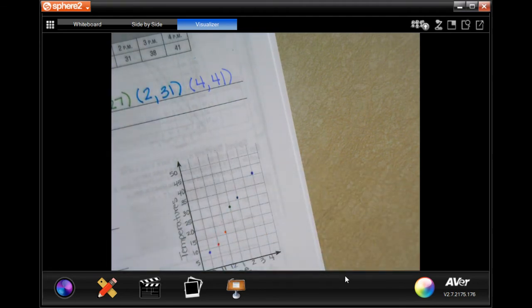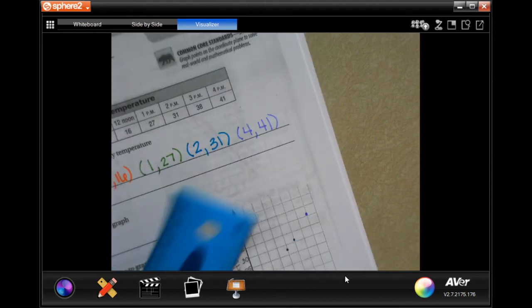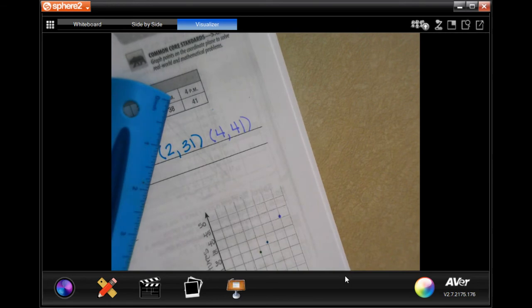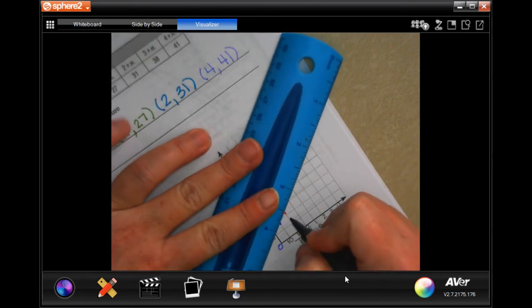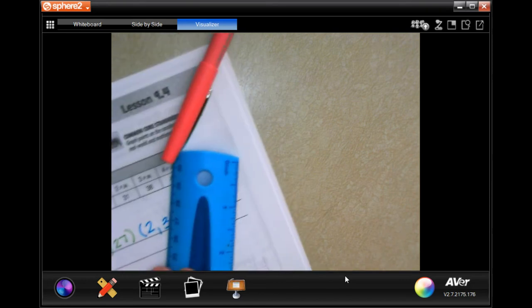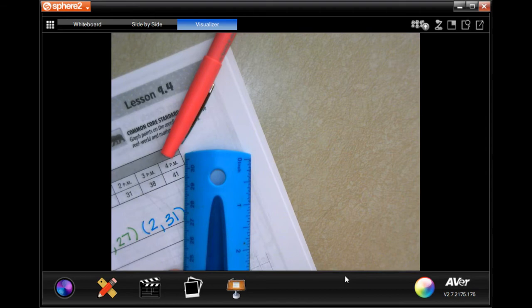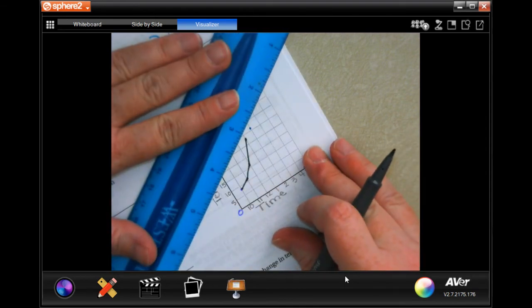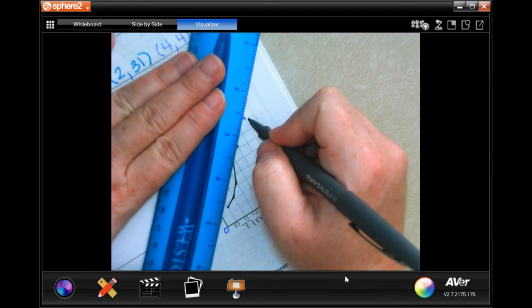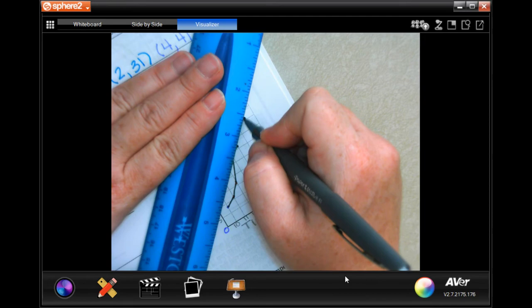So now it wants us to connect them, so let me grab my ruler, because even though it's not a perfectly straight line, it's easier to connect them if you have a ruler. So now I'm just going to go from one point to the next, boom, to the next, boom, to the next, boom, to the next, and to the last one.